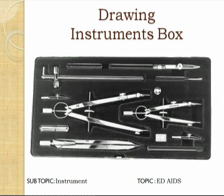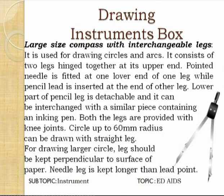The instrument box contains different instruments including a compass, divider, inking pen, small bow divider, and small bow compass — everything is available in a single drawing instrument box. We will see each instrument one by one.